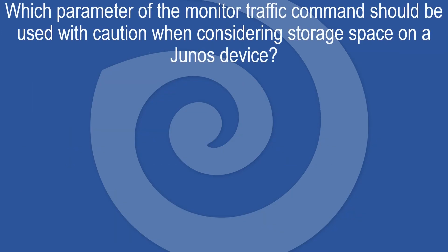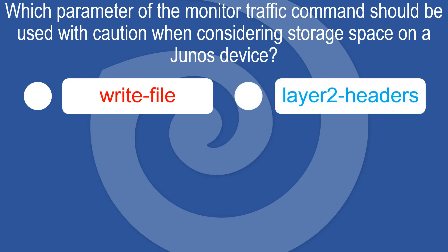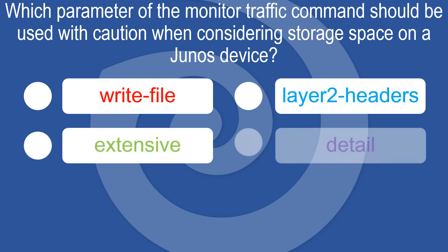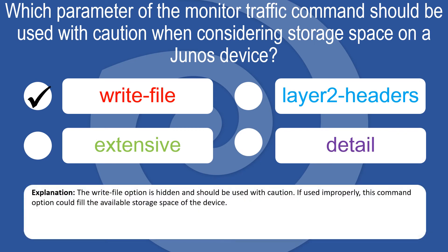Which parameter of the monitor traffic command should be used with caution when considering storage space on a Junos device? Options: Write file, Layer 2 headers, Extensive, Detail. The write file option is hidden and should be used with caution — if used improperly, it could fill the available storage space of the device.